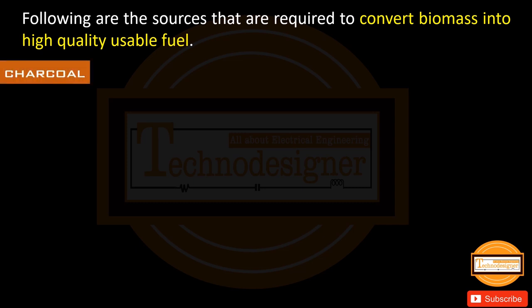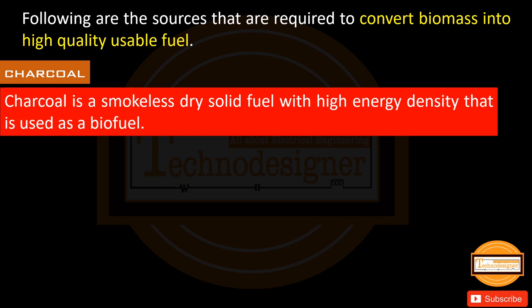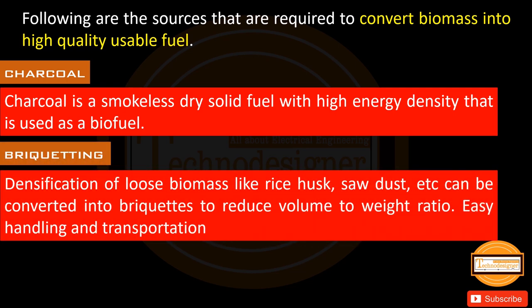Charcoal is a smokeless dry solid fuel with high energy density that is used as a biofuel. Briquetting: densification of loose biomass like rice husk, sawdust, etc. can be converted into briquettes to reduce volume-to-weight ratios so that it can be easily handled and transported.